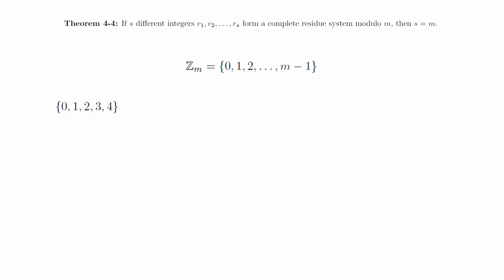For example, if we start with z sub 5, we can get a new residue system by replacing 4 with negative 1 and 3 with negative 2. This new complete residue system has the property that the values are as small as possible in absolute value.